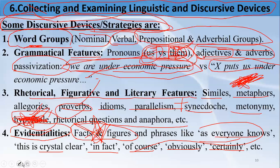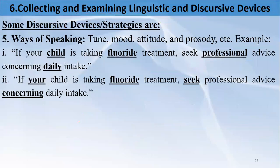Phrases like 'this is crystal clear,' 'in fact,' 'of course,' 'obviously,' 'certainly' are used by discourse producers to provide evidentiality. Then we have other discursive strategies — for example, the ways of speaking. It is sometimes not the thing a person says, but the way they say it that matters. We need to look at the mood, tone, attitude, and prosody of the speaker.